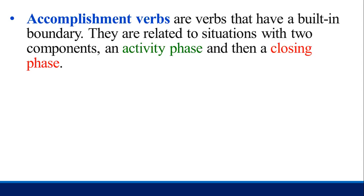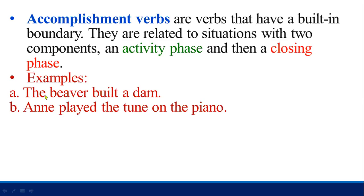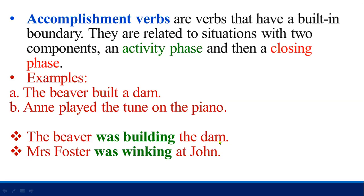Accomplishment verbs are also one type of dynamic verb. Accomplishment verbs are verbs that have a built-in boundary. They are related to situations with two components: an activity phase and then a closing phase. For example: 'The beaver built a dam' and 'played the tune on the piano.' Also: 'The beaver was building the dam' and 'Mrs. Foster was winking at John.'